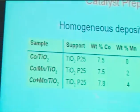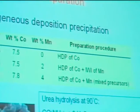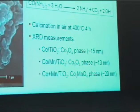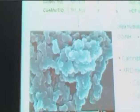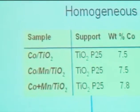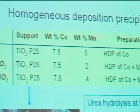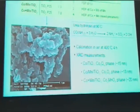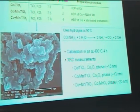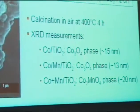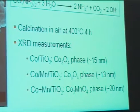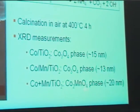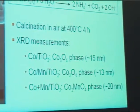The synthesis we apply is homogeneous deposition precipitation. We have made a lot of catalyst samples, but I will mainly discuss three samples throughout my talk: cobalt on titania P25 with a certain loading of manganese. We do the manganese loading in two ways — either after the homogeneous deposition precipitation of cobalt via impregnation, or we do them both together in one single step. X-ray diffraction of the calcined samples shows cobalt oxide particles for the first two preparations, but for the third one — where mixing is done simultaneously — we see a cobalt manganese oxide phase formed.